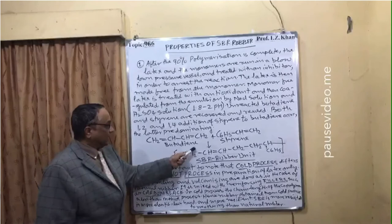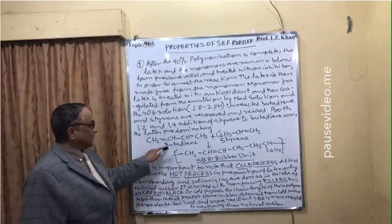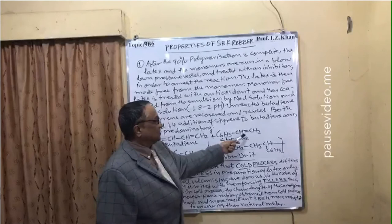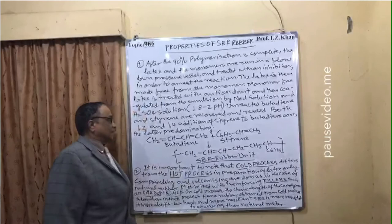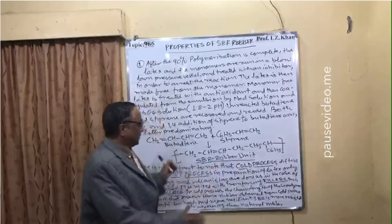Butadiene is CH₂=CH–CH=CH₂, with carbons numbered 1, 2, 3, 4 — four carbons with two double bonds, hence 'buta' for four carbons and 'diene' for two double bonds. Styrene is C₆H₅–CH=CH₂. Styrene and butadiene react together to form one unit of SBR rubber: –CH₂–CH=CH–CH₂–CH₂–CH(C₆H₅)–.